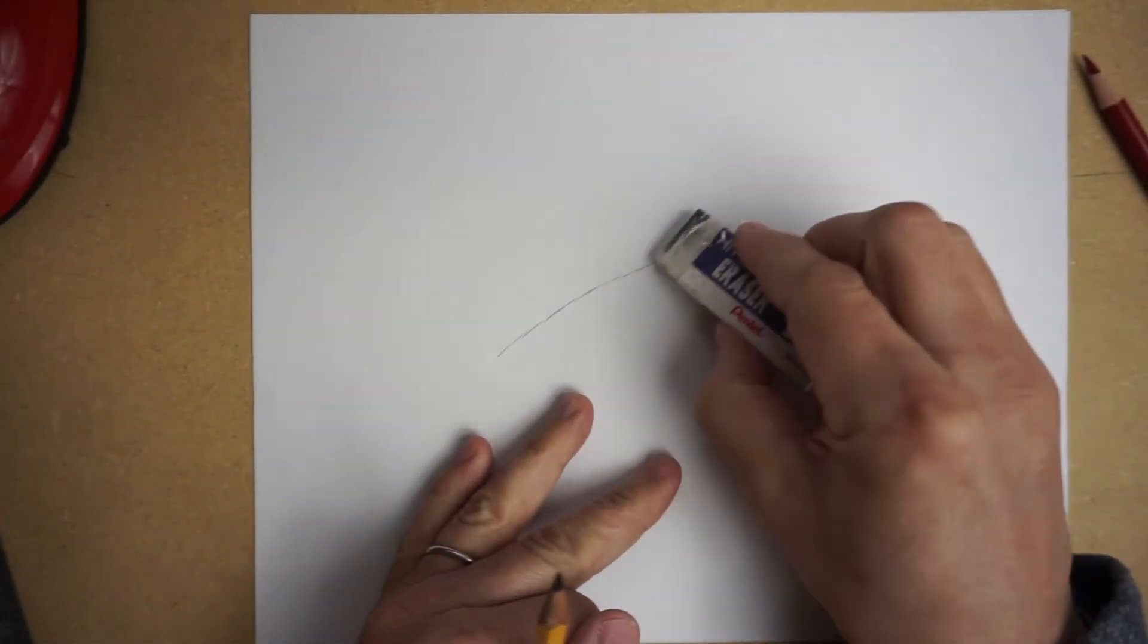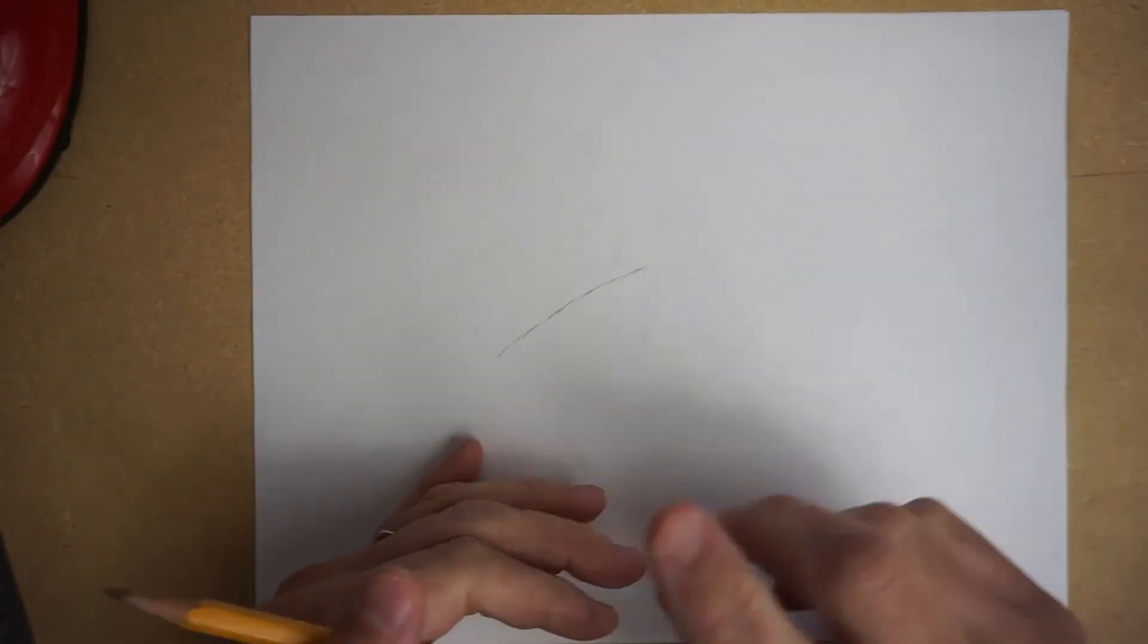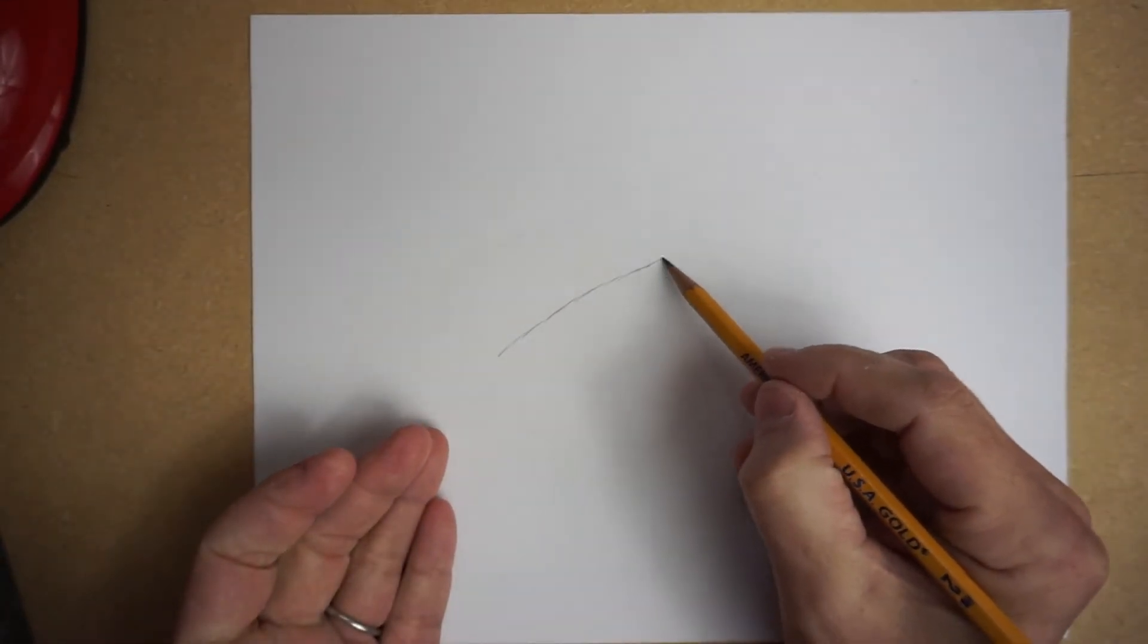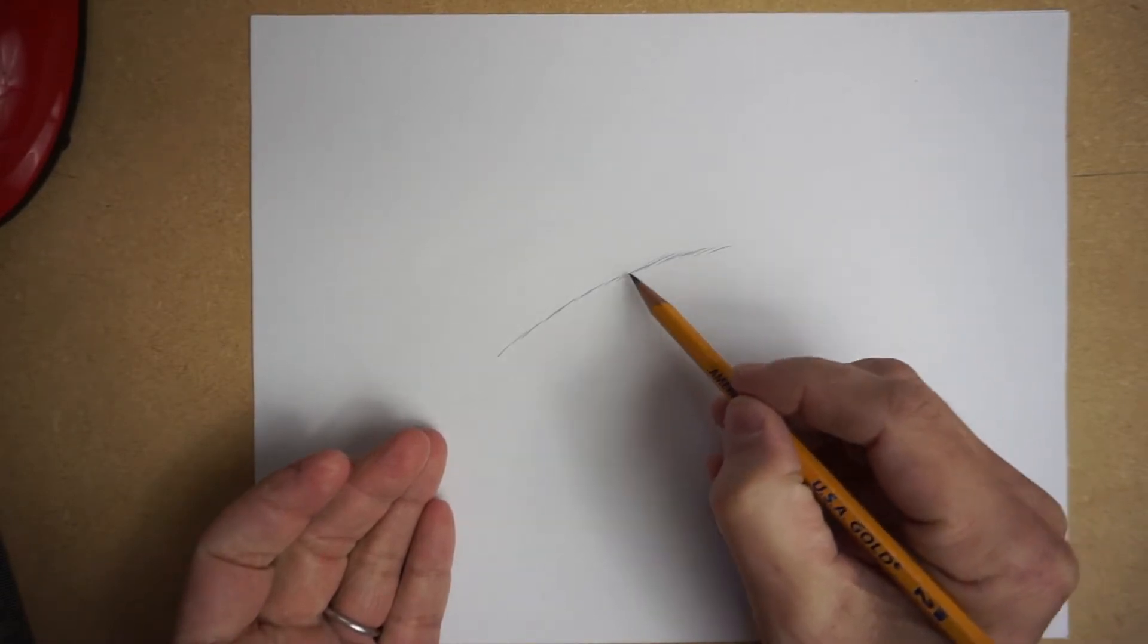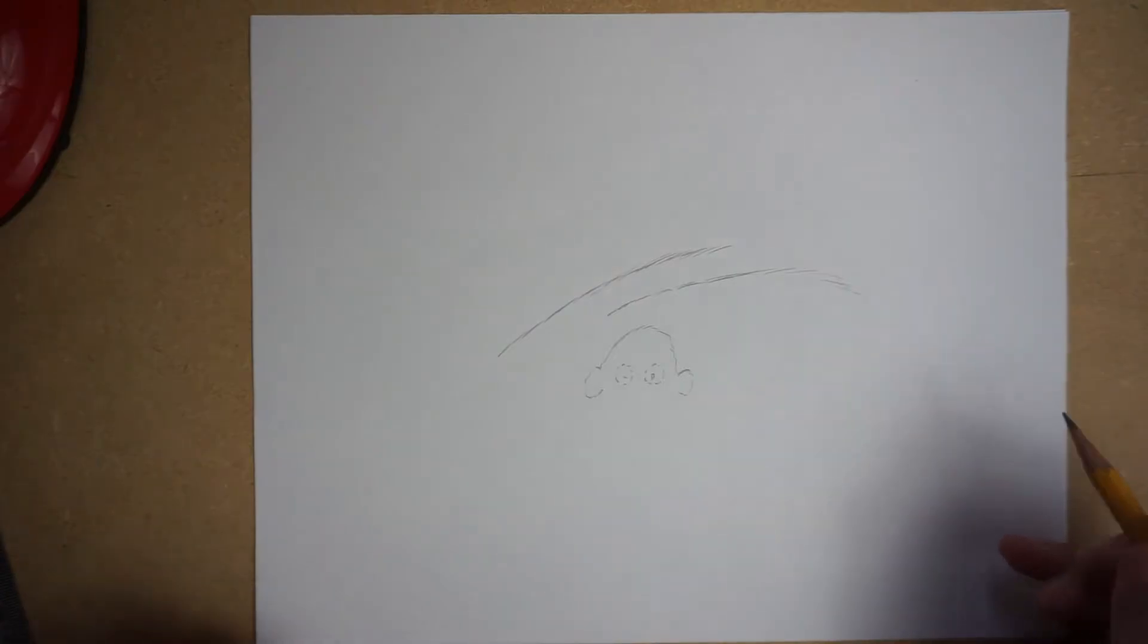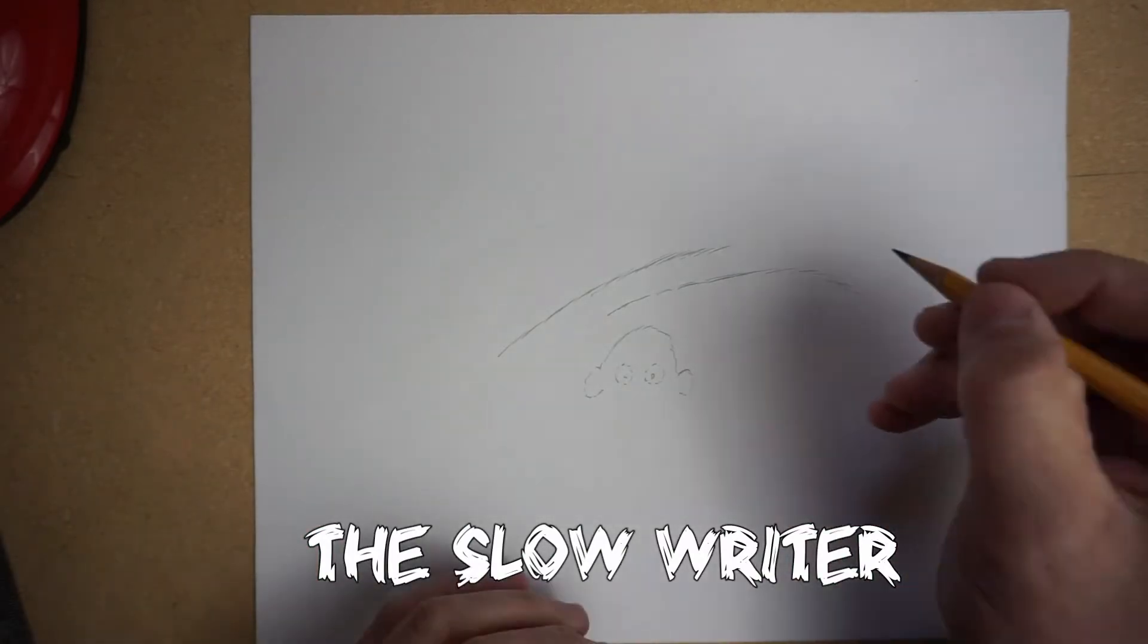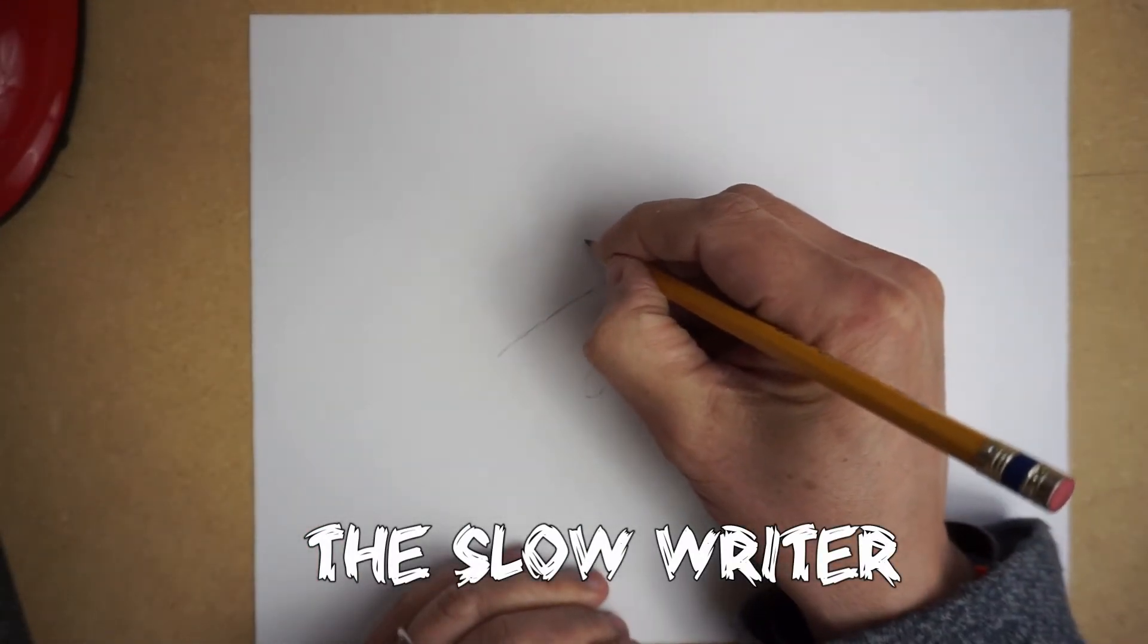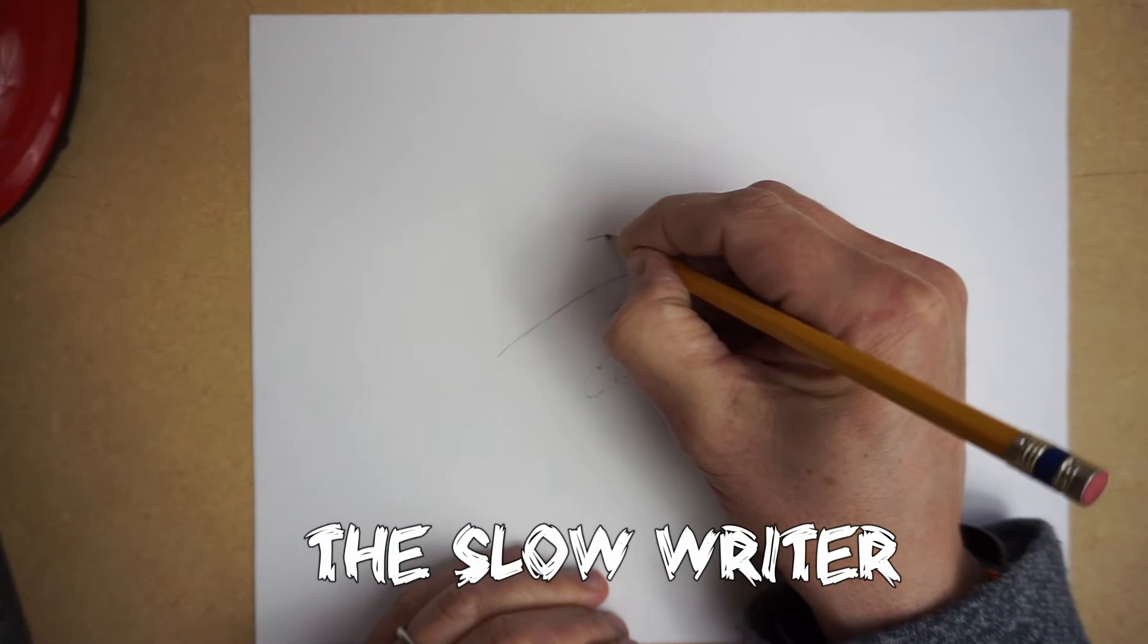But it also looks like everything has kind of a fur coat over it. Then we have the very slow and careful one. Okay, the slow and careful one goes really carefully.